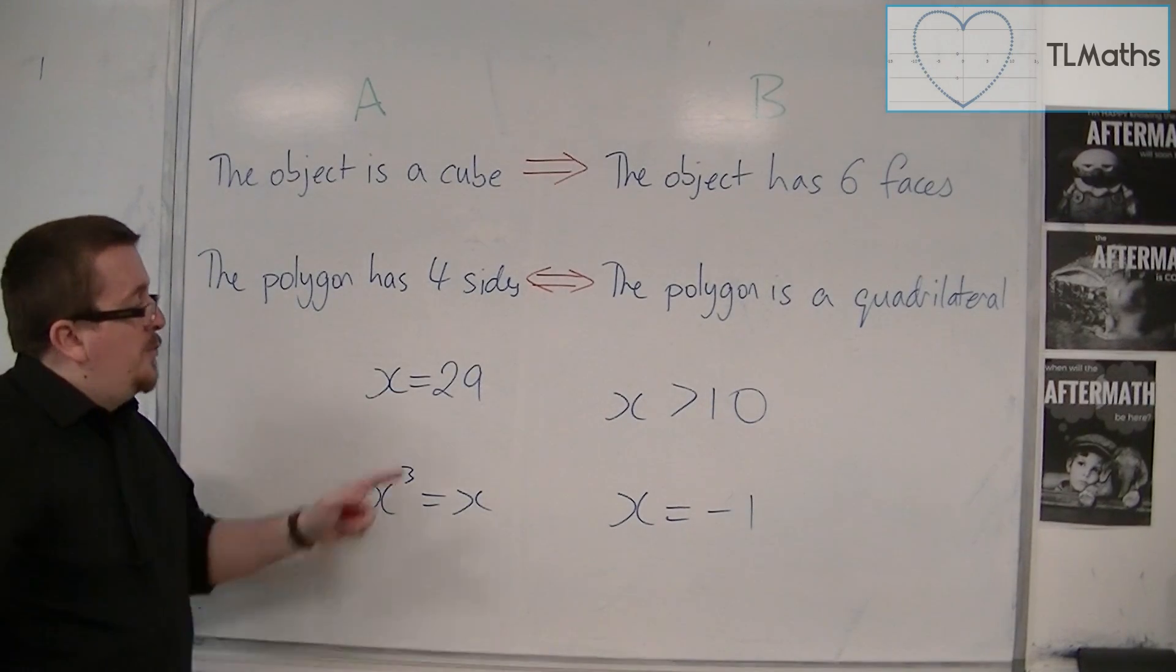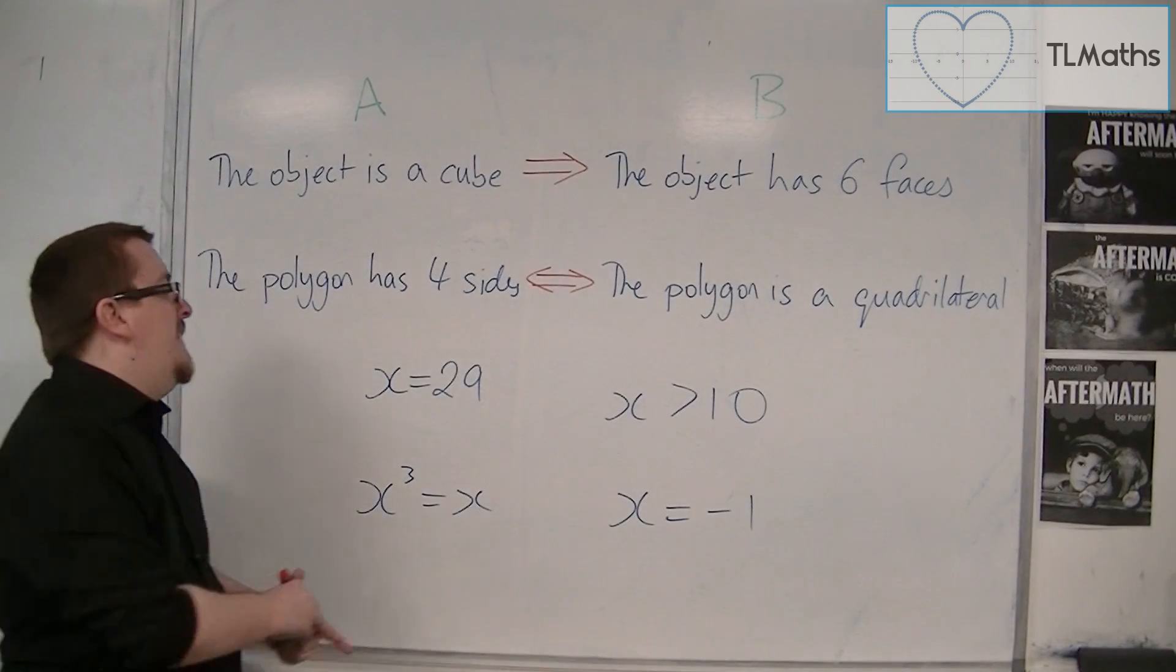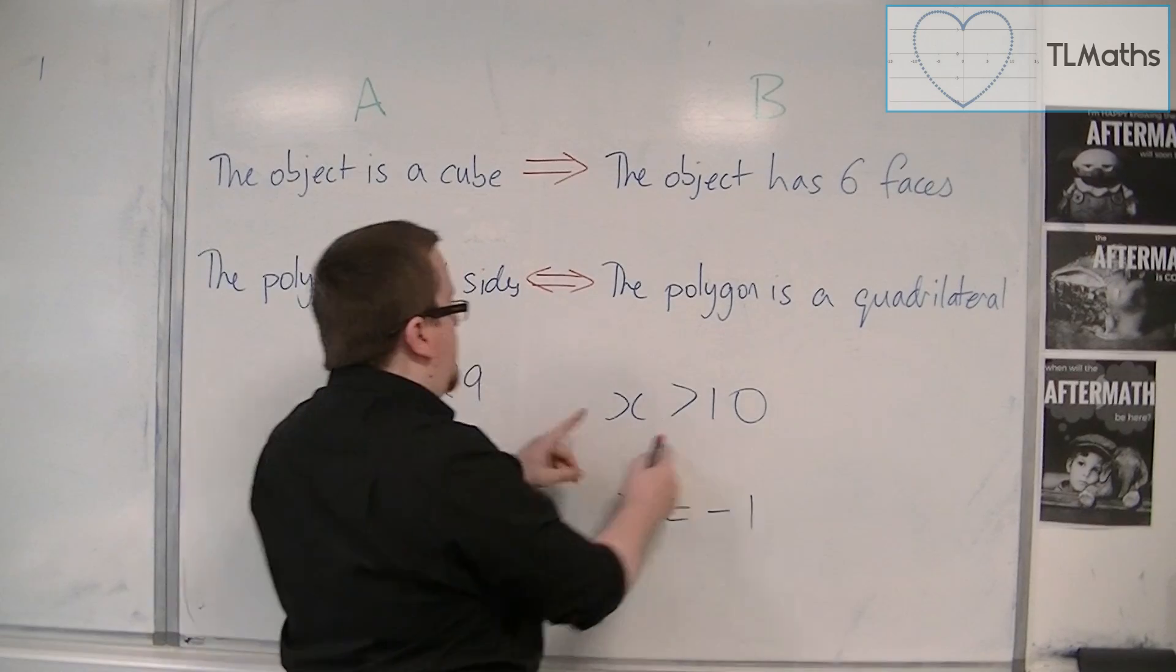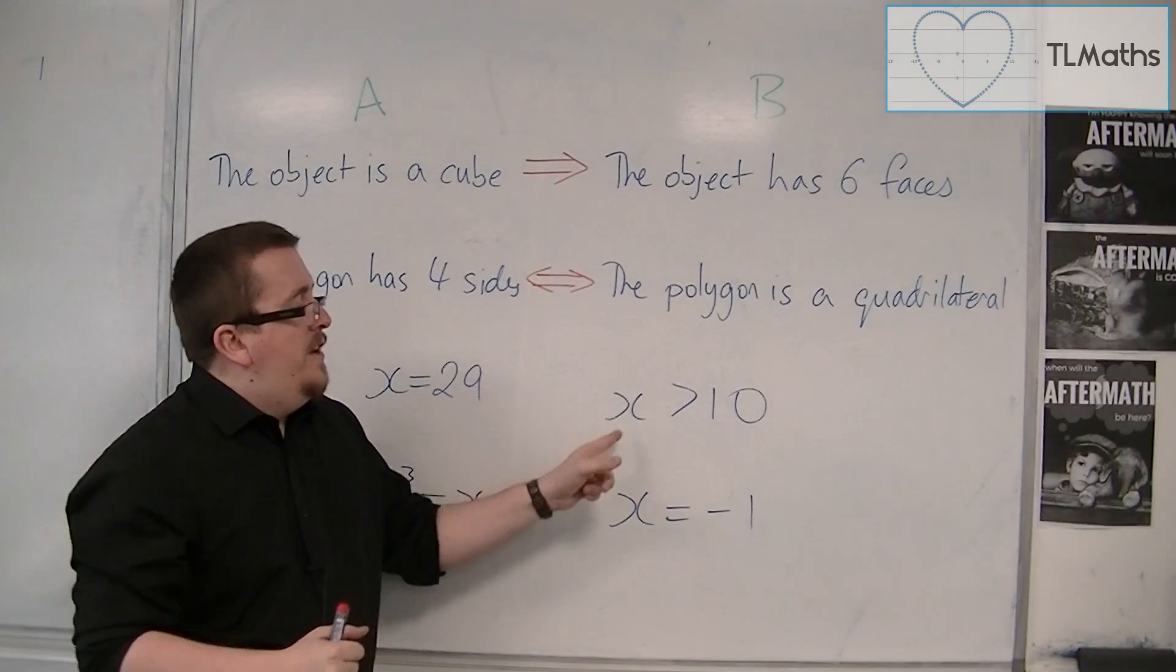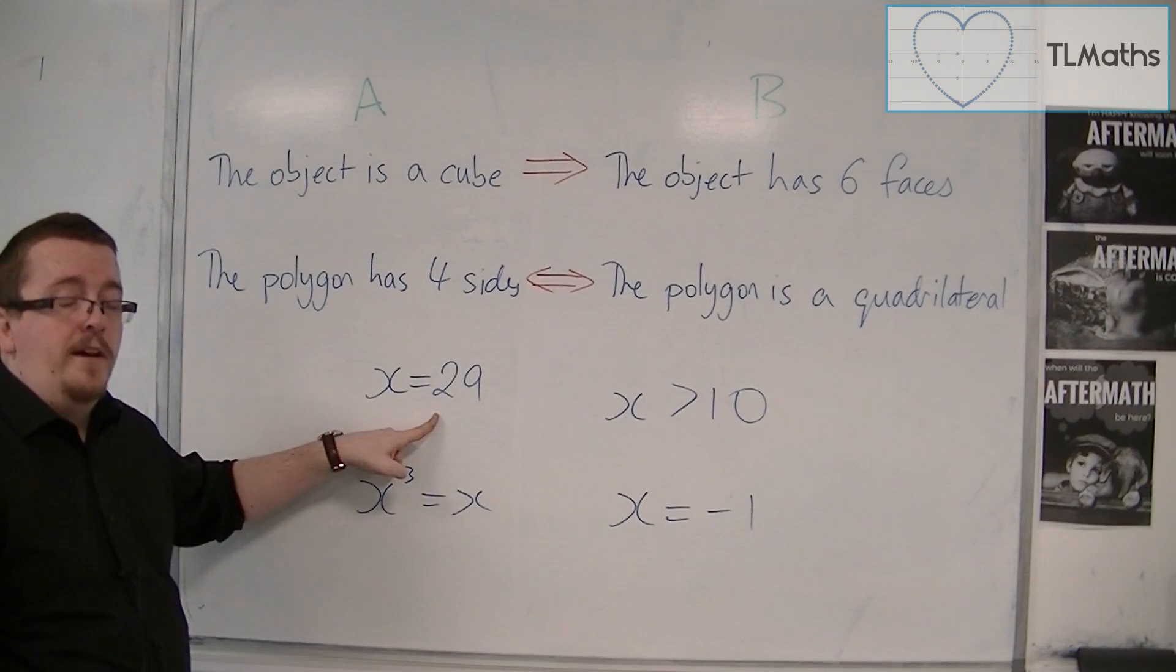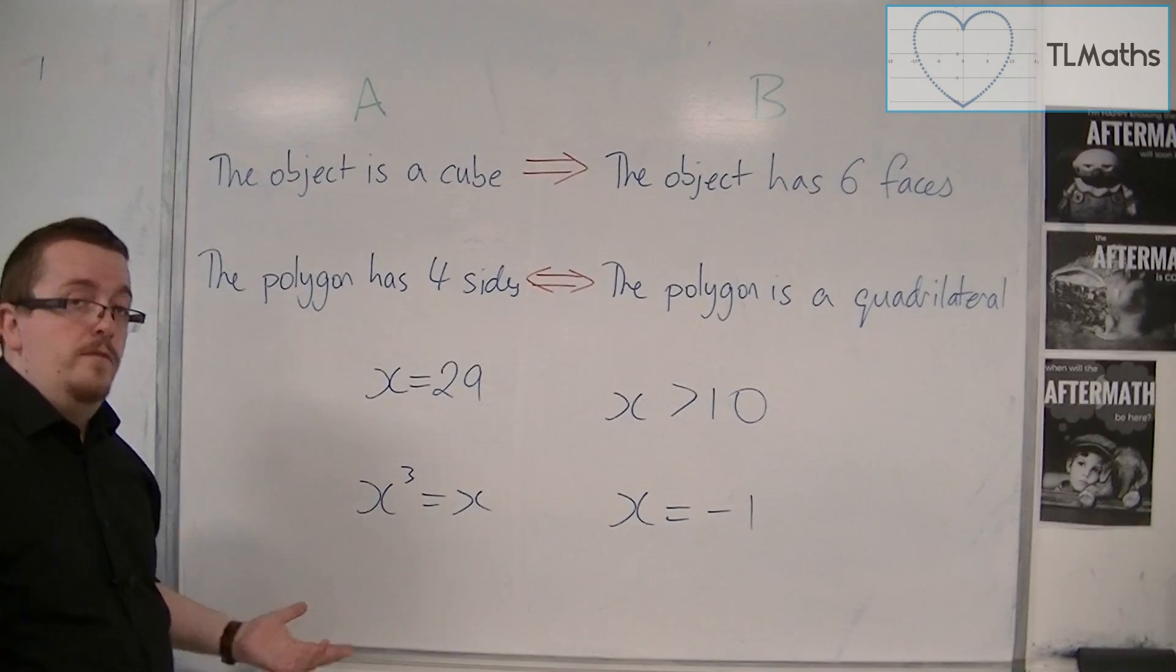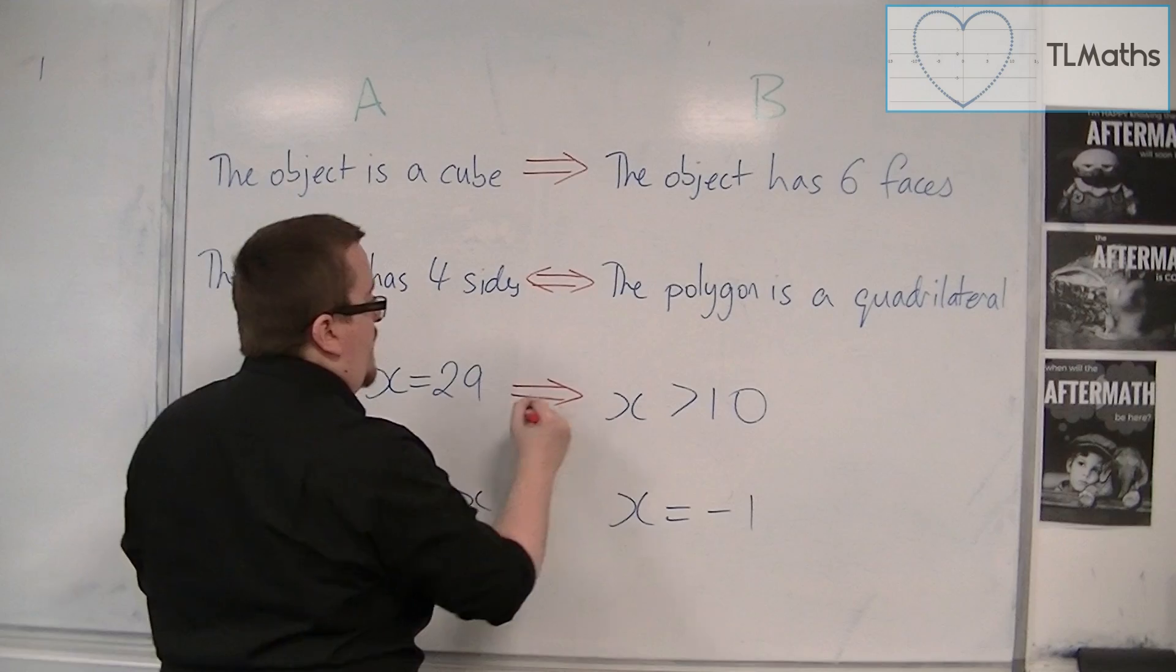For this one, x equals 29. X is greater than 10. So if x is 29, then x is greater than 10. So it works from left to right. However, if I'm told that x is greater than 10, that doesn't necessarily mean that x is 29, because x could be 11 or 100. So it doesn't work from right to left. And so it's only going from left to right.